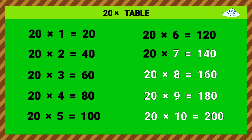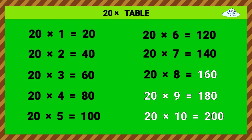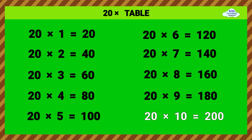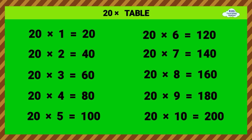20 times 7 equals 140. 20 times 8 equals 160. 20 times 9 equals 180. 20 times 10 equals 200.